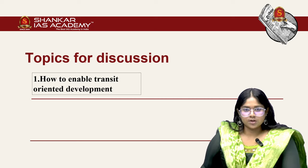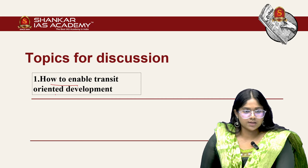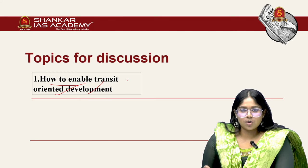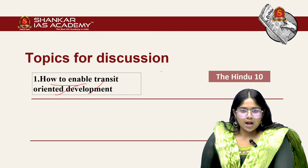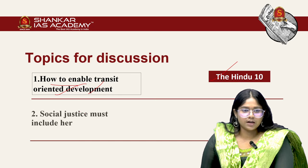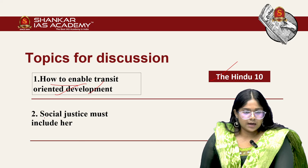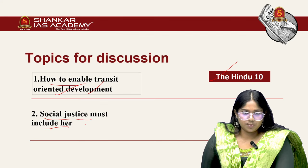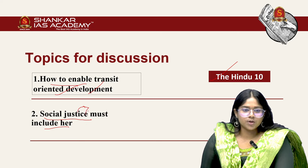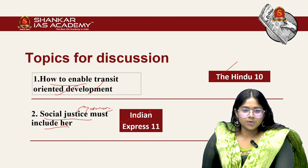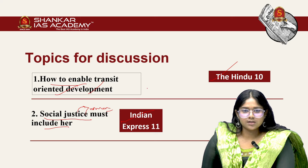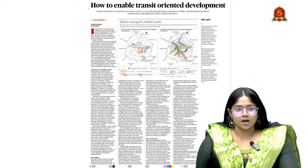Displayed here are the topics for discussion. The first article titled 'How to Enable Transit Oriented Development' talks about the integration of public transportation along with urban growth to increase productivity, and this article is from The Hindu. The second editorial article is titled 'Social Justice Must Include Her,' from the Indian Express. So without further delay, let's get into the articles discussion one by one.